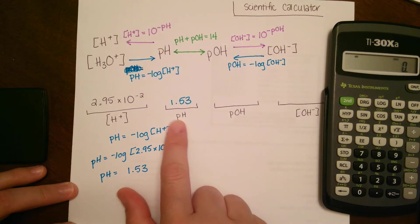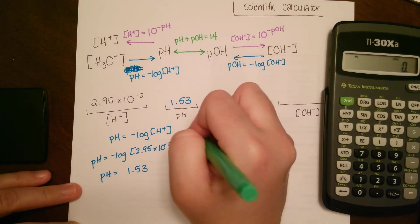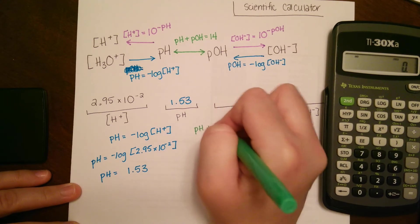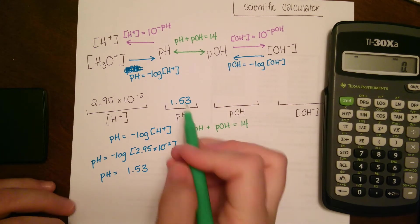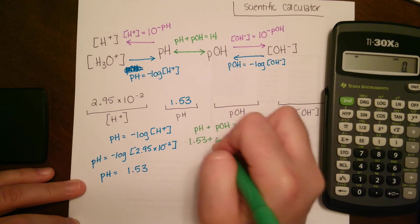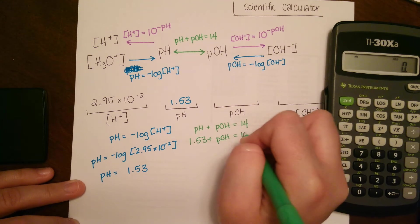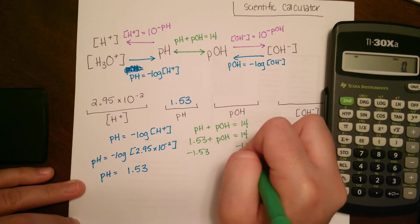From pH we're now able to go to pOH. The equation there is pH + pOH = 14. We can plug in the pH we found in the last problem: 1.53 + pOH = 14. We subtract 1.53 from both sides.